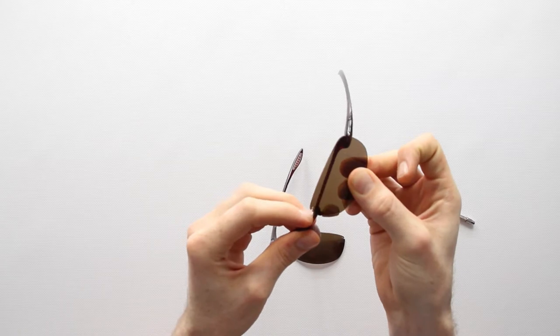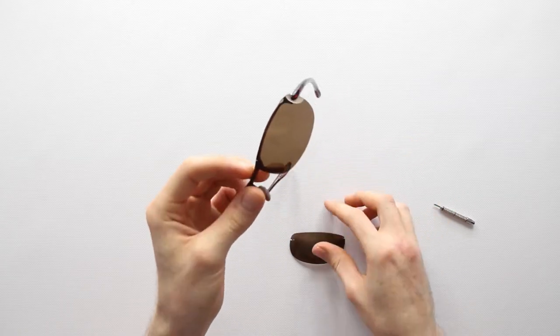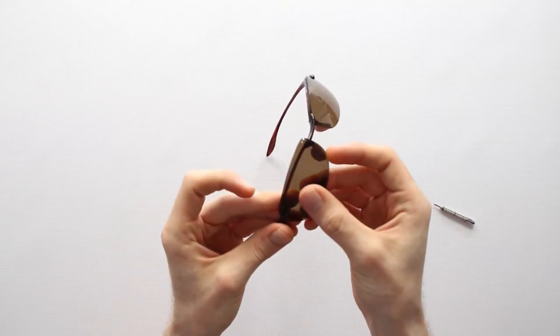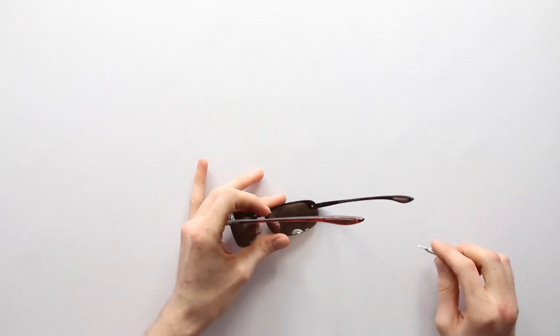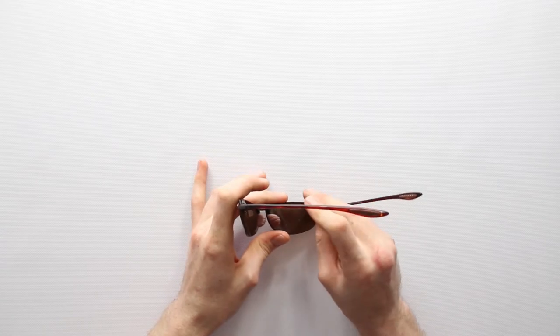Now that we've got the old lenses out let's get the new ones in. To install your new lenses bring the lenses in from the bottom and slide into the grooves. Apply some pressure to the lens until it fits into place.